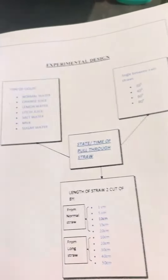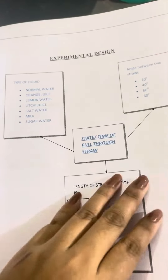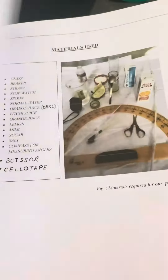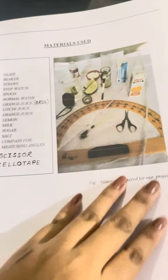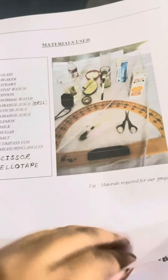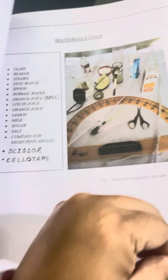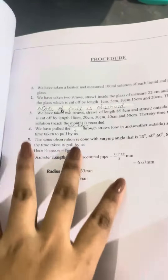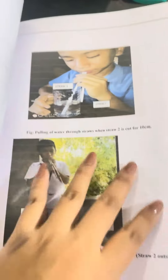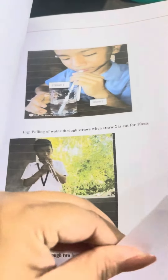Then comes the introduction page on the topic, followed by the objective and experimental design, then materials used. There should be a photo of the materials used — that will make it a beautiful one. Then comes the procedure, which should be written in points.